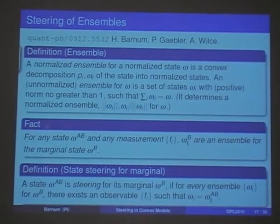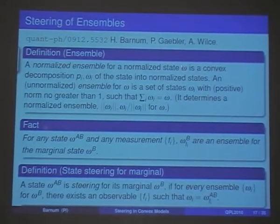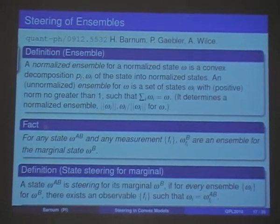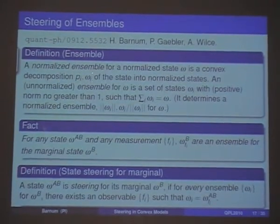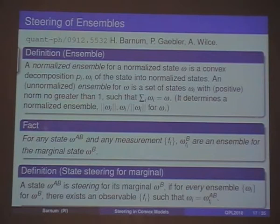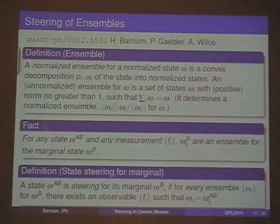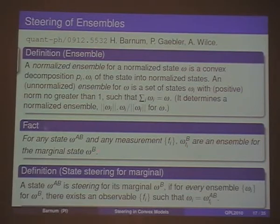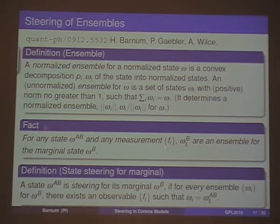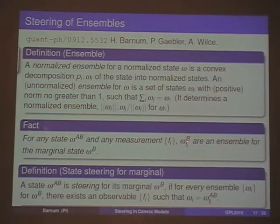Now, steering of ensembles — the main topic. We call a normalized ensemble for a state omega a convex decomposition with probabilities p_i and states omega_i. It's more convenient to include the normalization in the omegas and just say that an ensemble is a set of sub-normalized states that add up to that state. For any bipartite state omega_{AB} and any measurement {f_i}, the conditional states omega_{B|f_i} are an ensemble of the marginal state. These are the states induced on B after obtaining measurement outcome f_i on A, and their norm is the probability, which is convenient.